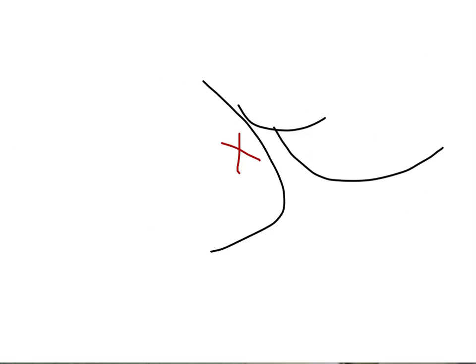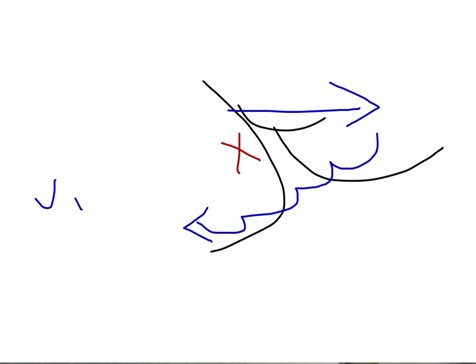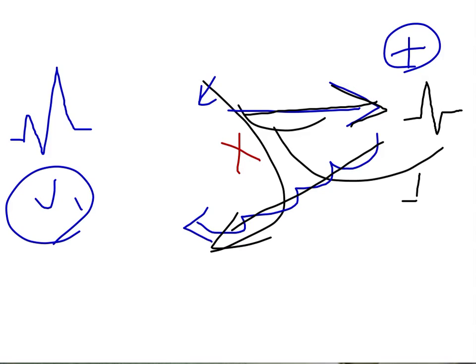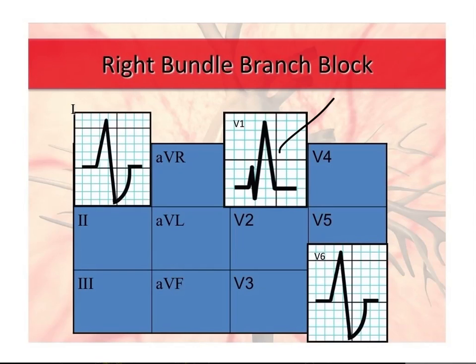Now what if it was a right bundle branch block? The right bundle branch would be blocked over here. Conduction would go normally — in V1 we know what happens: it goes this way and then from cell to cell back this way, with a little septal conduction to begin with. But over here at leads 1 and V6, the conduction is going towards and then away — and that's why you get the slurred S wave, because that wide conduction produces the slurred S wave in leads 1 and V6. So to be a true right bundle branch block, you need a terminal R wave in V1 and a terminal S wave in leads 1 and V6.